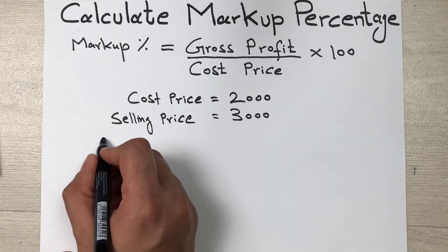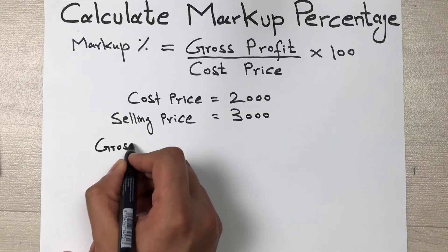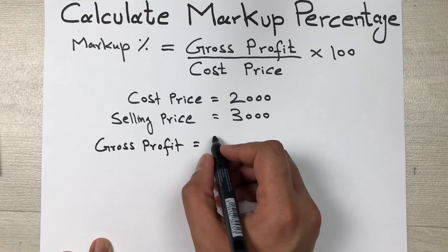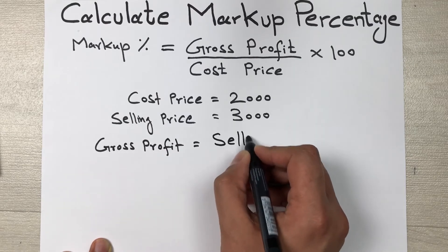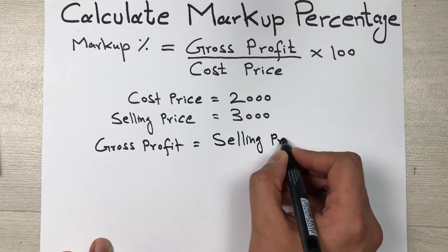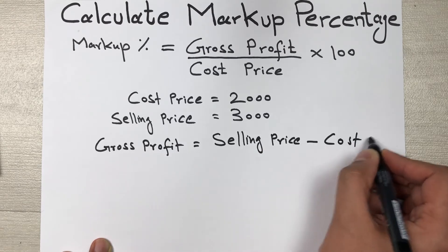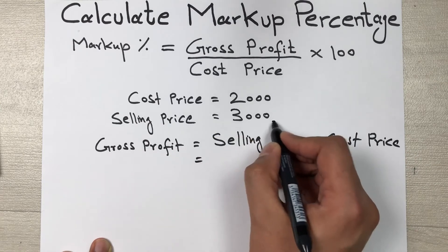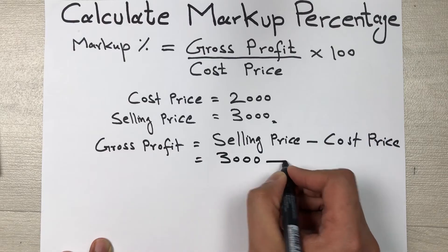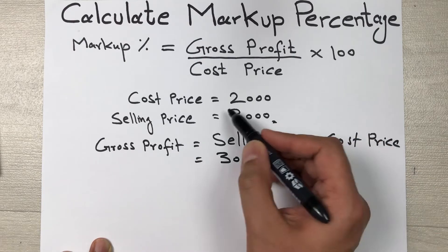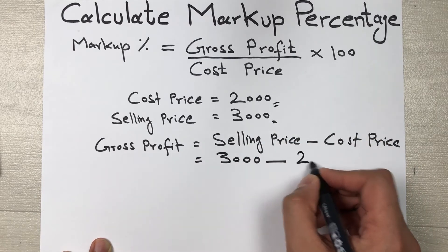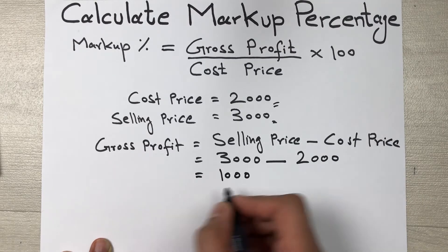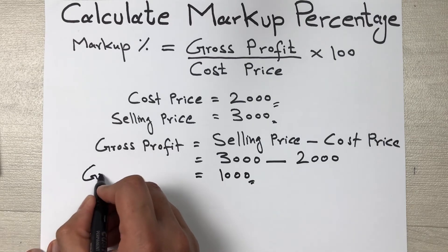Now we put the formula for gross profit: gross profit is equal to selling price minus cost price. Our selling price is 3000 minus cost price of 2000, so when we do this subtraction our answer is 1000. This 1000 is our gross profit.